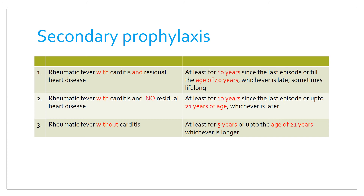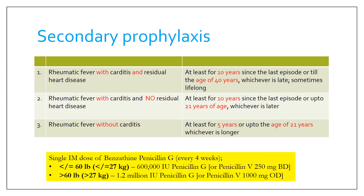The duration of prophylaxis depends on whether the patient has carditis or residual heart disease. The drug used is a single intramuscular dose of benzathine penicillin G every 4 weeks, or every 3 weeks in higher-risk areas. The dose is 600,000 IU for patients ≤60 lbs and 1.2 million IU for patients >60 lbs. In compliant patients, oral penicillin V 250 mg BD or 1000 mg OD can be given.